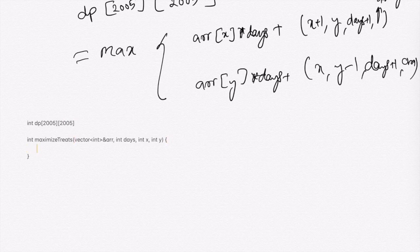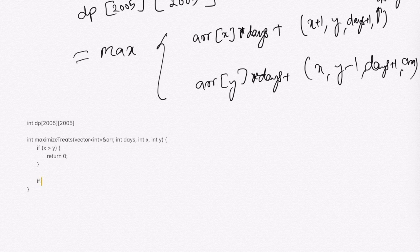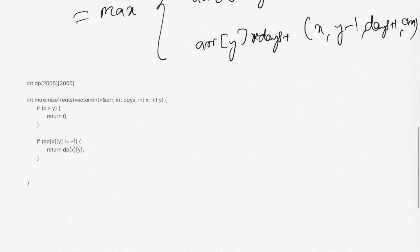It is very important to write base conditions — without them, the recursion falls into an infinite loop. The first base condition: if x is greater than y, return zero, because x > y means the pointers have crossed and we're looking at redundant elements. The second condition: if the sub-problem for (x, y) has already been solved, return dp[x][y] directly instead of recomputing it.